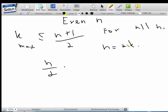Let n equal 2l. Actually, let's not use 2k. That'll get confusing. So let n equal 2l. We have 2l plus 1 over 2. And this is equal to l plus 1 over 2.